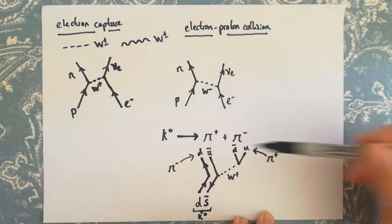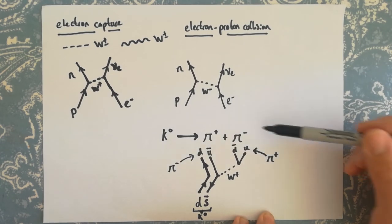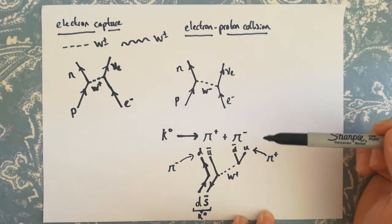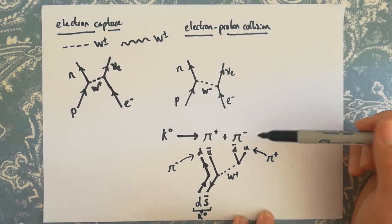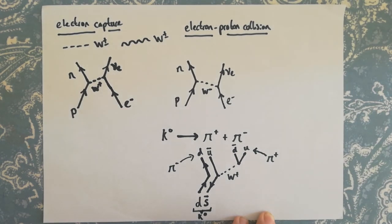If you want to look into it further, you'll be able to find on the internet the other Feynman diagrams for K plus and K minus. But really, for the exam, in fact, all you need to know is that kaons decay into different combinations of pions. That's one of the ways that they can decay. Okay, that's it for this video.